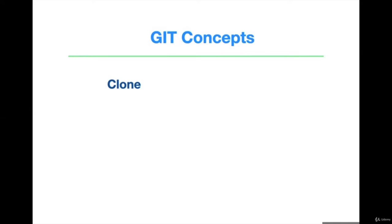Let's see some Git concepts. The first one is clone — it brings or downloads a repository which is hosted remotely to your local machine. Add is used to track the files and any changes. Then commit — commit saves the files to Git locally. Push is used to upload all the Git commits to a remote repository.